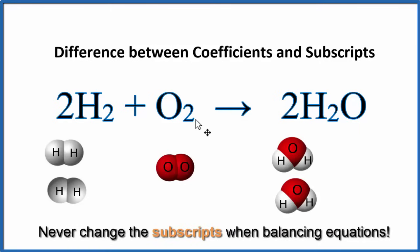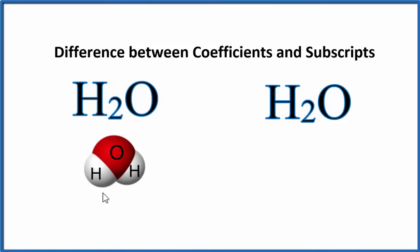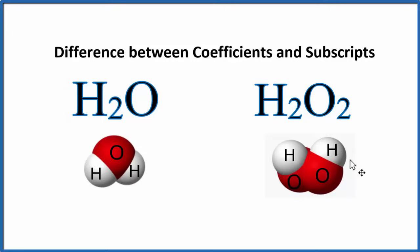The subscripts, they help us make sure we have the right compounds. So let's take a look at what would happen if we changed a subscript. So what would happen if I was balancing a chemical equation, instead of H2O, I changed the subscript to H2O2. First off, we have a very different looking molecule here. And because we've changed its molecular structure, it has different properties.